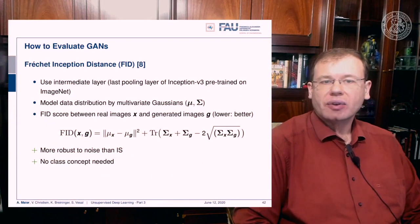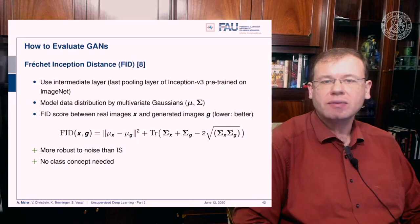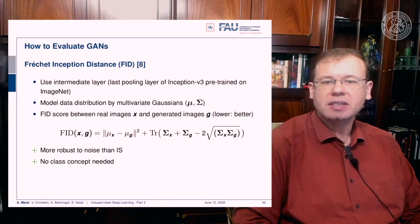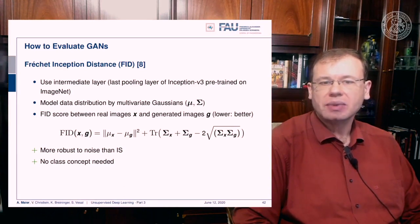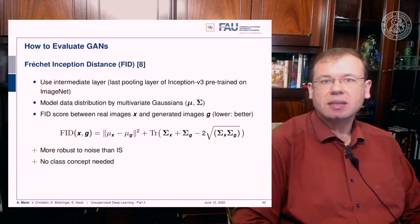Another measurement is the Fréchet Inception Distance (FID), which uses an intermediate layer — the last pooling layer of Inception v3 pre-trained on ImageNet. The data distribution is modeled as a multivariate Gaussian, and the FID score between real images X and generated images G is expressed as the L2 norm of the difference between mean values of X and G, plus the trace of the covariance matrices of X and G minus two times the square root of covariance matrix X times covariance matrix G. FID is more robust than the inception score and does not require the class concept, working directly with multivariate Gaussians to model distributions.